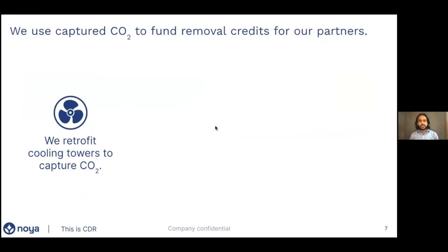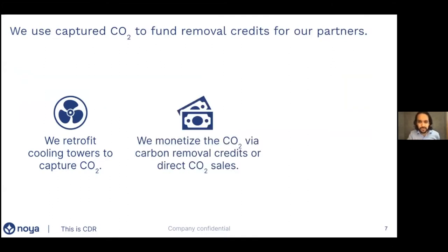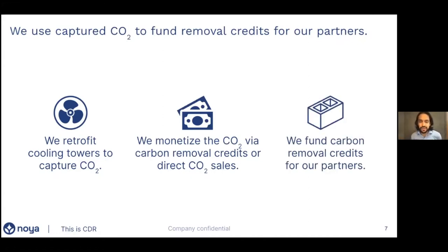The specific way we help commercial building owners bridge the gap on their emissions is a three-step process. The first step is retrofitting their cooling towers to capture CO2. We then take the CO2 that we generate and monetize it — either by removing it from the atmosphere, generating a credit and selling that credit, or by directly selling the CO2 we're producing. Then we take part of the revenue we collect and use it to fund carbon removal on behalf of the companies that own the cooling towers we're retrofitting. So we get a cheap distributed direct air capture solution and our partners get free carbon removal credits.